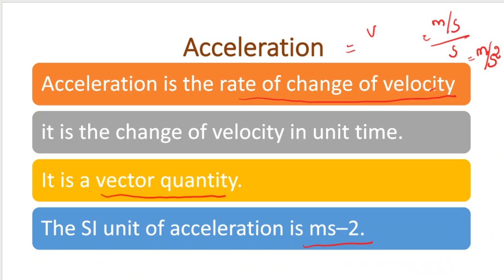Let us discuss about acceleration. Acceleration is the rate of change of velocity. Since velocity is a vector quantity, acceleration is also a vector quantity, and its unit is ms⁻². Acceleration equals velocity divided by time; velocity has unit m/s and time has unit seconds, so the unit of acceleration is m/s², or ms⁻².